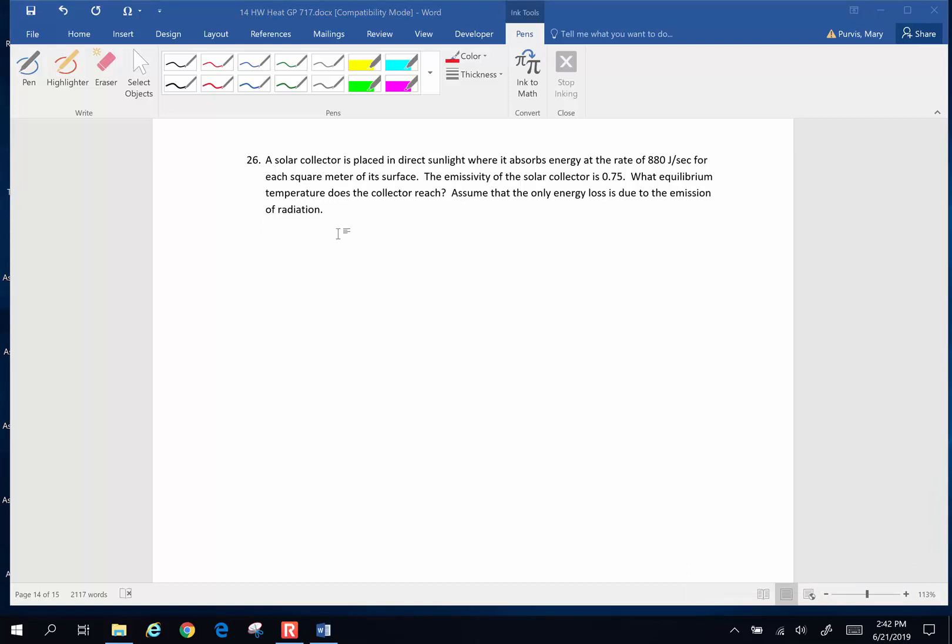A solar collector is placed in direct sunlight where it absorbs energy at a rate of 880 joules per second. So that's my Q. That is my Q over T. That's my 880 joules per second for each square meter of surface. That's the surface area we're talking about is one square meter. The emissivity of the solar collector is 0.75. What equilibrium temperature should the collector reach? Assume that the only energy loss is due to the emission of radiation.